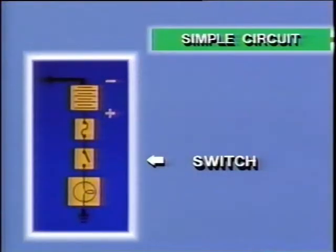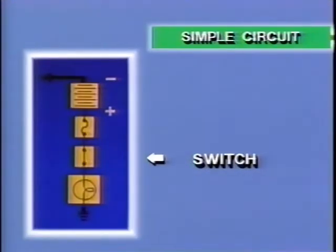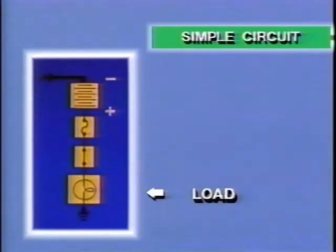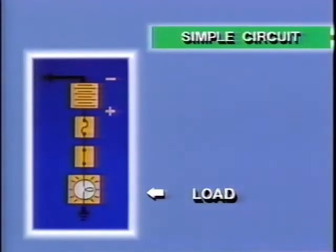The switch controls electrical flow. When the switch is open, electricity cannot flow. When the switch is closed, electricity then flows through. This lamp is the electrical component that the circuit is designed to operate. An electrical device is often called a circuit load.